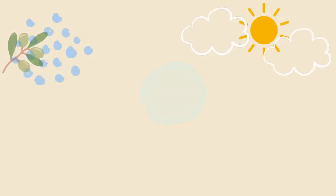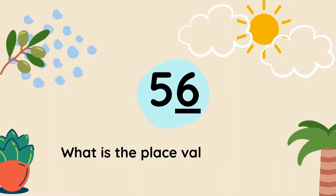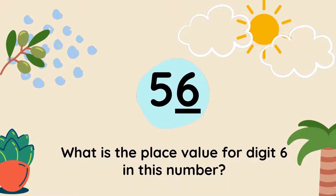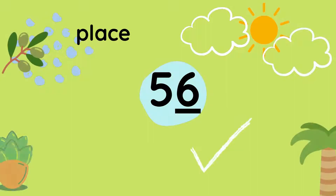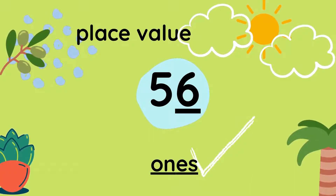Next, let's look at the next question. Look at the number carefully. Look at the underlined number. What is the place value for digit 6 in this number? Let's check the answer. The place value for digit 6 in this number is 1s — ones. Well done if you got the answer correctly.